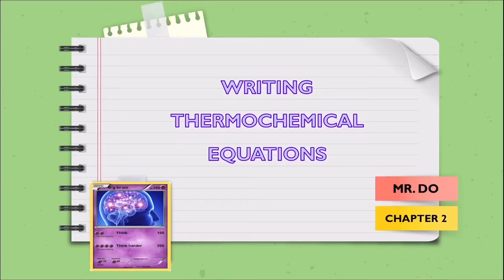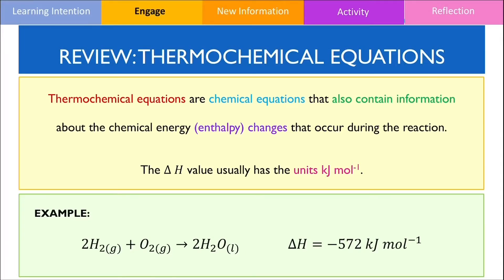Hello class. In this video we're going to learn how to write thermochemical equations. In the previous video, I explained that thermochemical equations are chemical equations that also give us the change in enthalpy that occurs during a reaction. The units for the change in enthalpy are often expressed in kilojoules per mole. We're going to learn how to write thermochemical equations for the combustion of fuel from experimental values as well as from the heat of combustion values obtained in your data booklet.